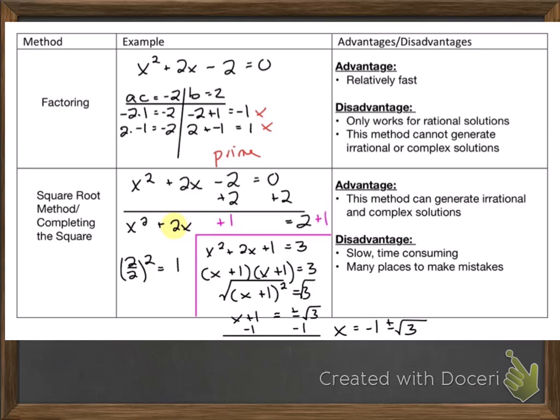Well, let's look at the first method. If we use factoring here, the problem with this is we don't have any two numbers that multiply up to negative 2 and add up to positive 2. So if we were just using factoring, we would be left with this answer of prime. So the good thing about factoring is that it is relatively fast.